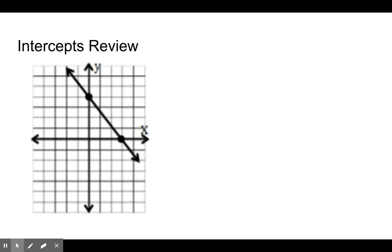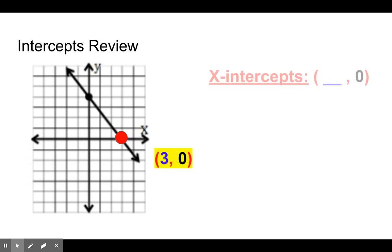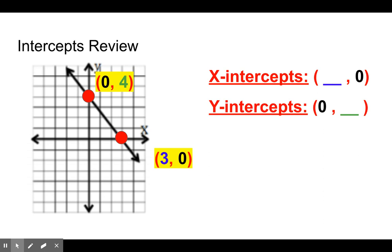Next we're going to take a look at x and y intercepts. The x intercept is where we cross or touch the x axis. This point in red is the point 3, 0. So for x intercepts, we have a number, 0 — the number's in the x spot. The y intercept is 0, 4 in this case. It's where we cross or touch the y axis. So for the y intercept, we have 0, a number — the number's in the y position.